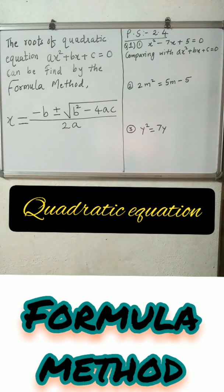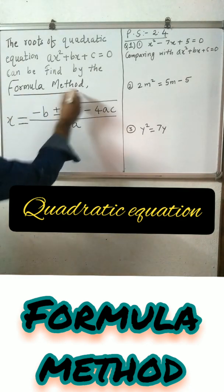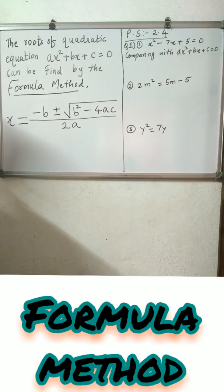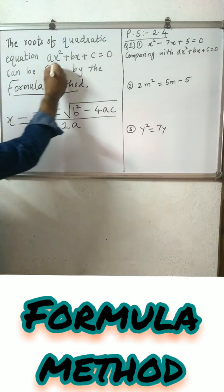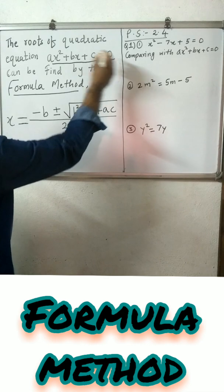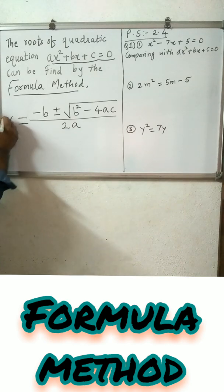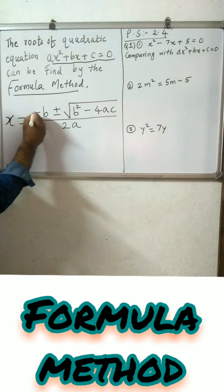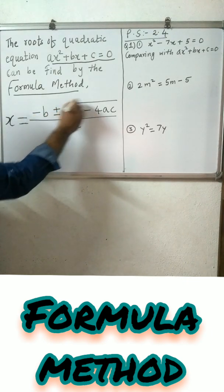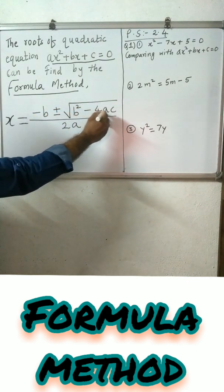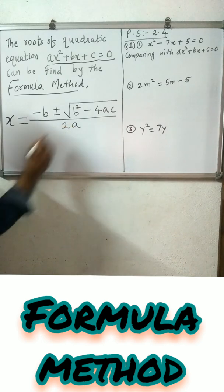Today we will learn how to solve a quadratic equation by the formula method. The roots of a quadratic equation ax² + bx + c = 0 can be found by the formula: x is equal to minus b plus or minus the square root of b² minus 4ac, all upon 2a.